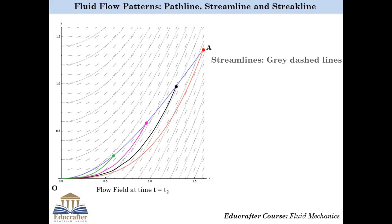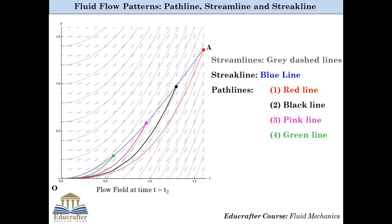So, the grey dashed lines are streamlines, the blue line is the streakline corresponding to point O, and the red, black, pink and green lines are the pathlines corresponding to the red, black, pink and green particles respectively. I hope with this example you now have a clear picture of what streamline, streakline and pathline represent and how they are different from each other.